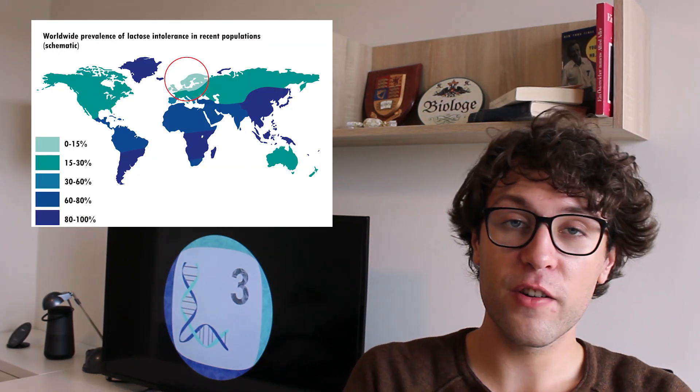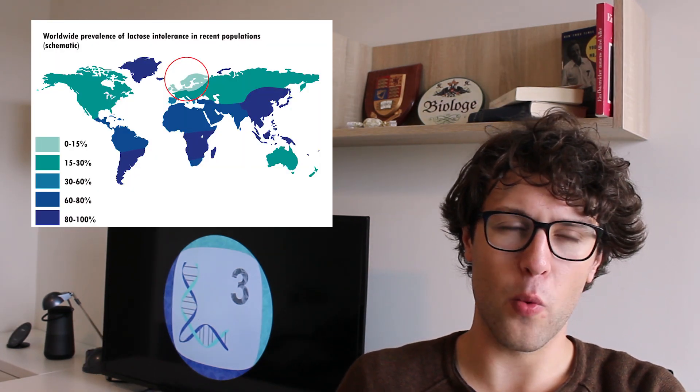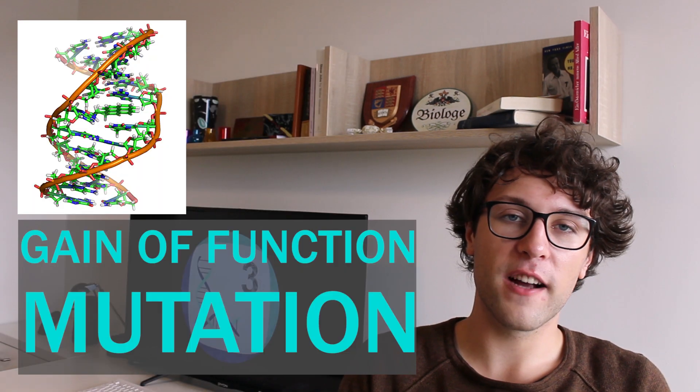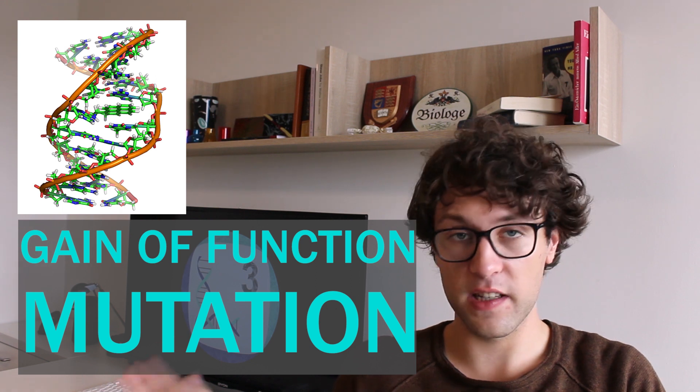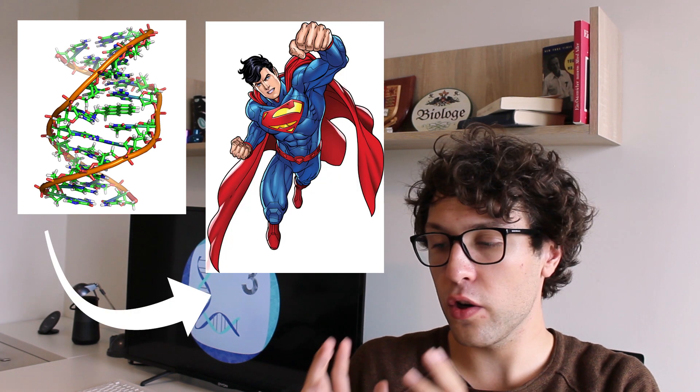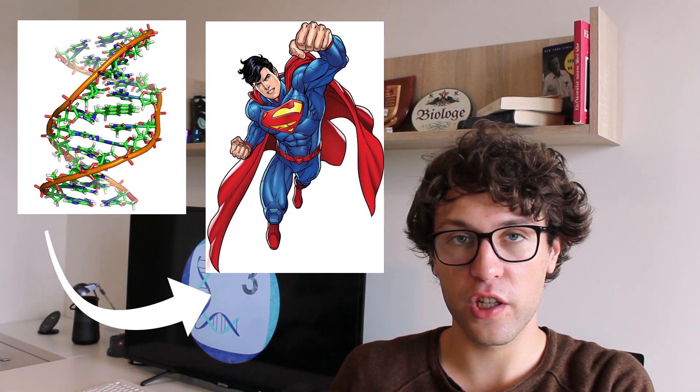In certain human populations, however, the activity of lactase stays quite constant throughout life. We can mainly observe this in people of Northern European descent, but why is it so? Through very extensive studies, so-called gain-of-function mutations have been identified in these people. Gain-of-function mutations means that through small changes in the DNA sequence of these people, they acquire new, unique, beneficial characteristics, meaning in this case, the ability to digest lactose.